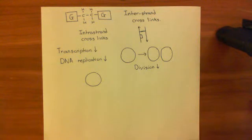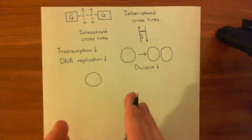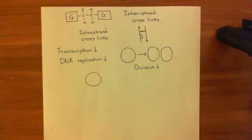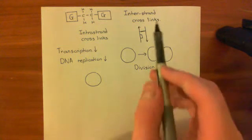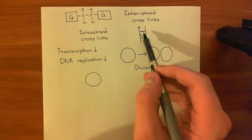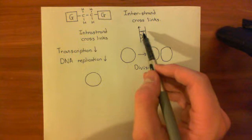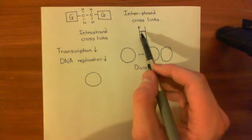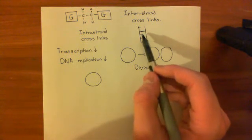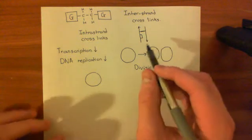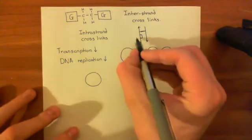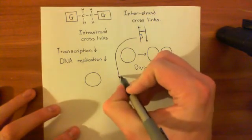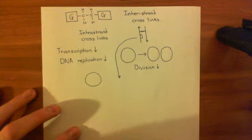These drugs are also going to lead to the activation of potentially pro-apoptotic mechanisms, because this modification to the DNA can be recognized by the machinery that recognizes DNA damage. It's not going to like these chemical modifications whatsoever. There are proteins which recognize DNA damage, and they will be activated by these inter- and intra-strand crosslinks.